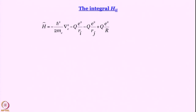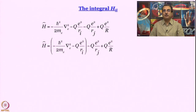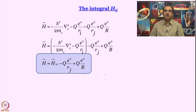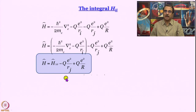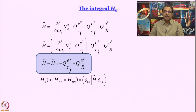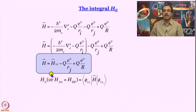To evaluate H_ii we write down the Hamiltonian. Taking the first two terms in brackets — kinetic energy and attraction to one nucleus — that is essentially a one-electron Hamiltonian, h-hat_1e. So the full Hamiltonian h-hat equals the one-electron Hamiltonian minus q_e squared by r_j plus q_e squared by capital R. By the Born-Oppenheimer approximation, this last term is essentially a constant. Substituting this into H_ii gives three integral terms.